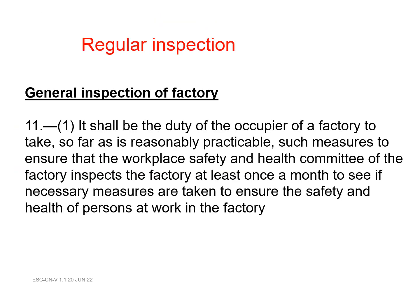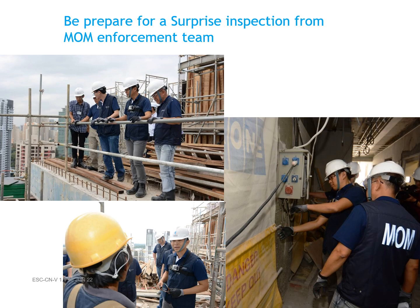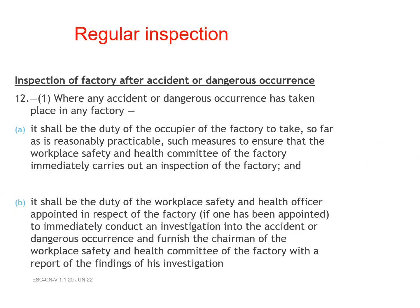Regular Inspection. General inspection of factory, Regulation 31: It shall be the duty of the occupier of a factory to take, so far as is reasonably practicable, such measures to ensure that the Workplace Safety and Health Committee of the factory inspects the factory at least once a month to see if necessary measures are taken to ensure the safety and health of persons at work in the factory. Be prepared for a surprise inspection from the MOM enforcement team. Inspection of factory after accident or dangerous occurrence, Regulation 32: Where any accident or dangerous occurrence has taken place in any factory, it shall be the duty of the occupier of the factory to take, so far as is reasonably practicable, such measures to ensure that the Workplace Safety and Health Committee immediately carries out an inspection of the factory.